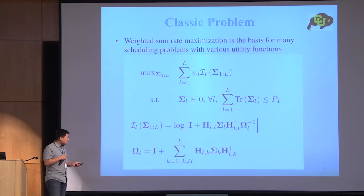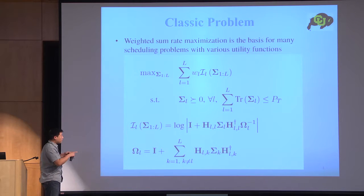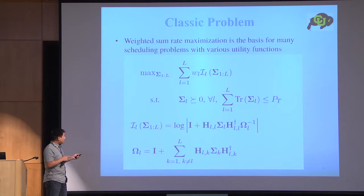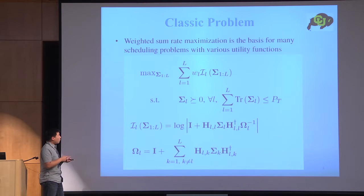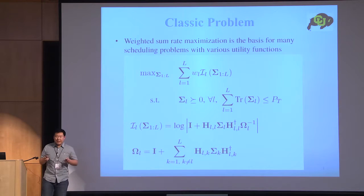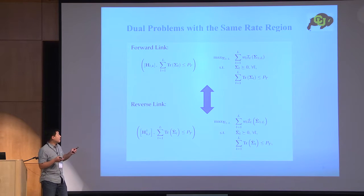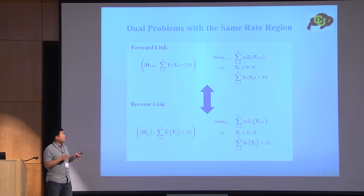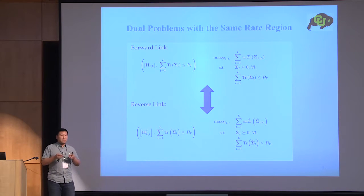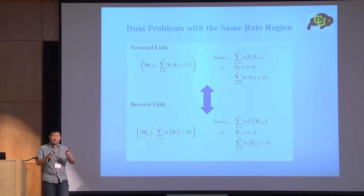Omega is the noise plus interference covariance matrix here. We can derive that the achievable rates are for L from one to capital L, as shown in these results. We are trying to solve this optimization problem. In optimization theory, we always look at the dual, so we look at the dual of that within the same rate region. From rate duality theory, we know that they have the same achievable rate.